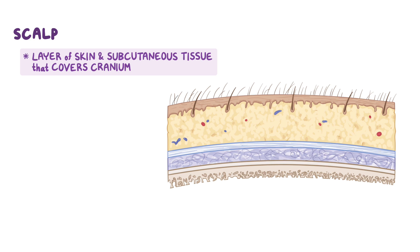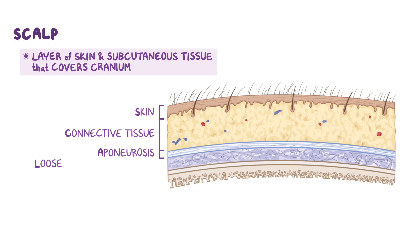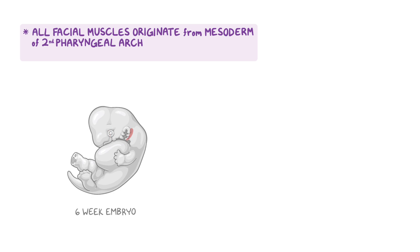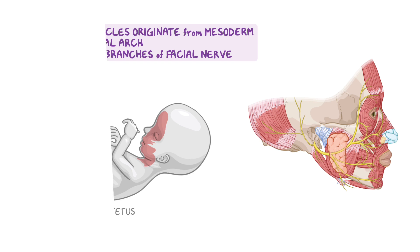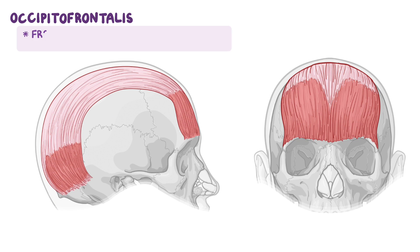As a quick recap: the scalp is a layer of skin and subcutaneous tissue that covers the cranium, made of five layers — skin, connective tissue, aponeurosis, loose connective tissue, and pericranium. All facial muscles originate from the mesoderm of the second pharyngeal arch, which is why they are all innervated by the branches of the facial nerve. The occipitofrontalis muscle has a frontal belly and an occipital belly connected by the epicranial aponeurosis, and its function is to elevate the eyebrows and wrinkle the forehead.